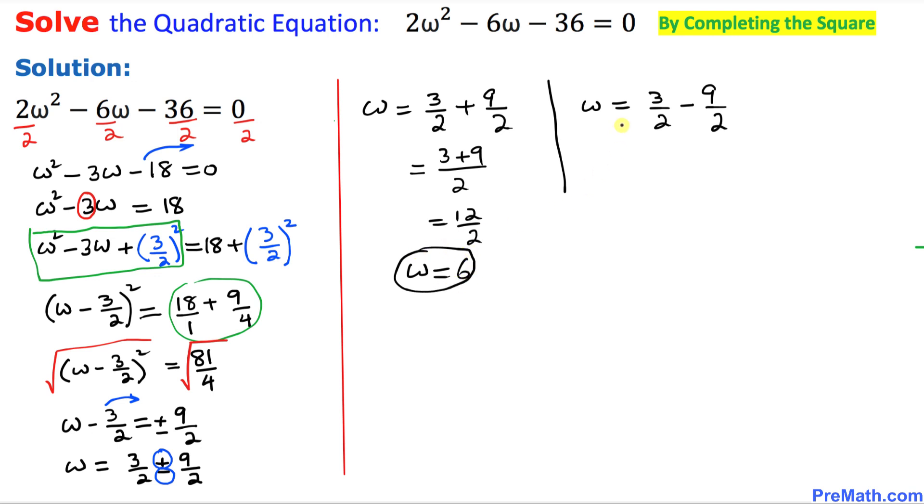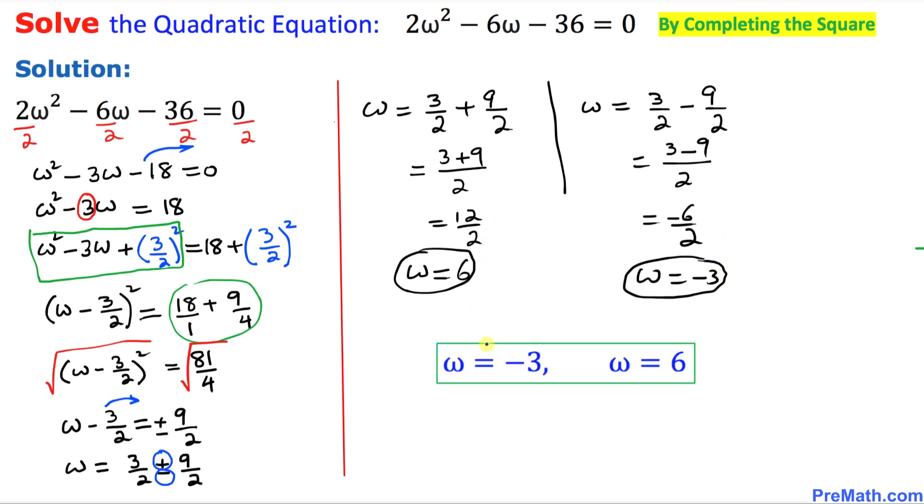Here we do the same thing. Our common denominator is 2. 3 minus 9 is -6 divided by 2, so ω = -3. Thus our solution turns out to be ω = -3 and ω = 6.